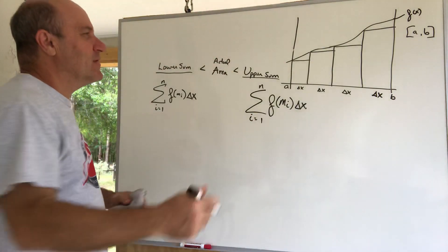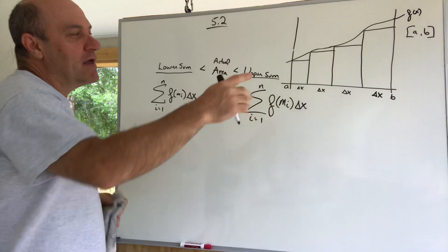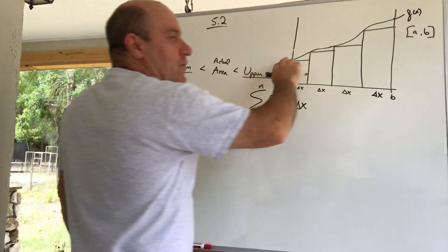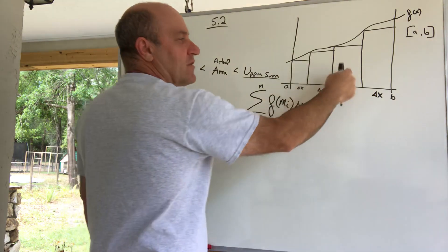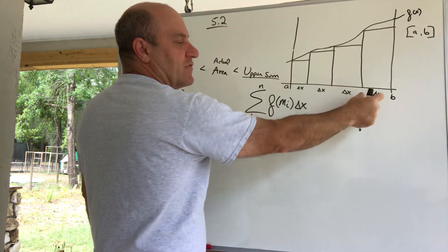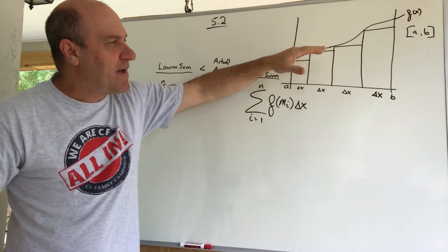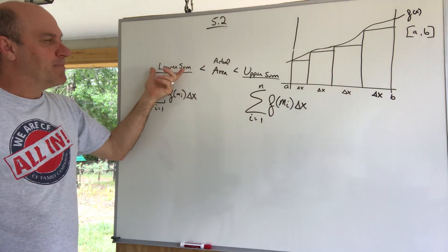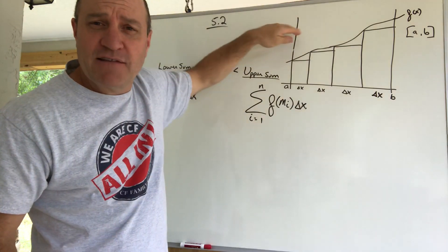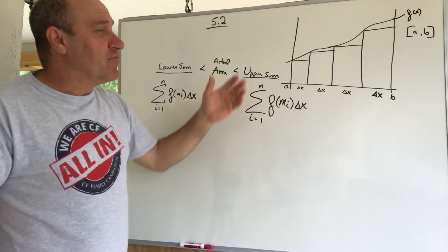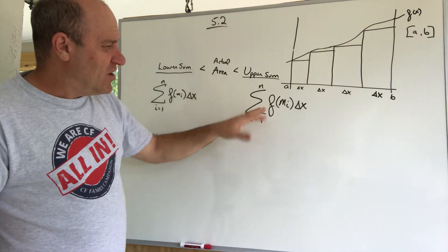Welcome back to Calculus 1, still on 5.2, area under a curve. We have a function and want to find the area from a to b. We divide it into rectangles, each with width delta x. When we top them off as inscribed rectangles, we call that the lower sum — it's less than the actual area. When we use circumscribed rectangles, that's the upper sum, and it's an overestimate, greater than the actual area.